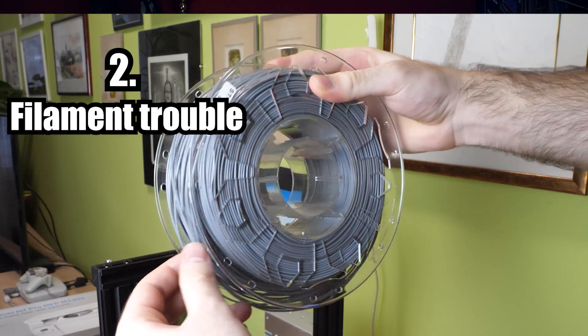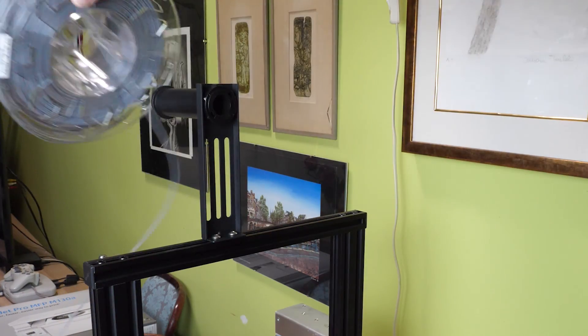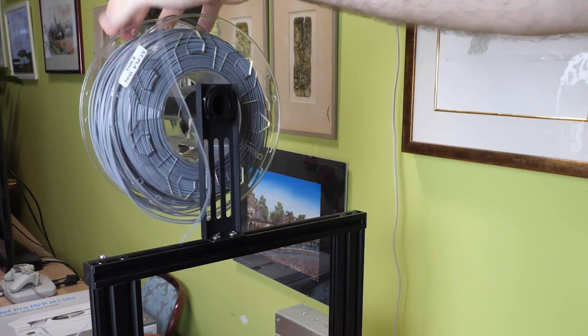Another thing that bothered me is that during the printing process, you are using this filament that you're supposed to leave right here. But what happened to me is that it got stuck. Basically what happened is that the string got tangled somehow, and I wasn't able to print anymore. Of course, this doesn't happen every time, but when it does happen, it's very annoying.